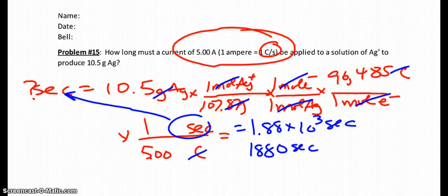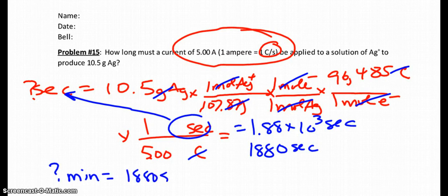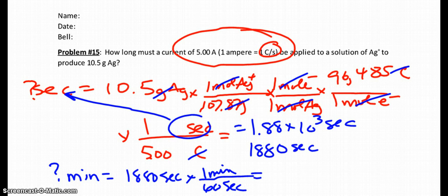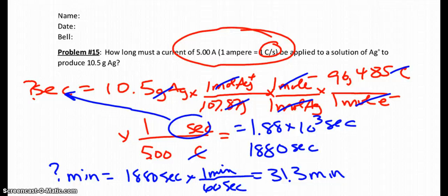They didn't ask you, but could we find out how many minutes that is? How many minutes are in 1880 seconds? There are 60 seconds in one minute, and that ends up being roughly a half an hour. So if you want to produce that much silver on your spoon or on your platter or something, you've got to let it run for 31.3 minutes.